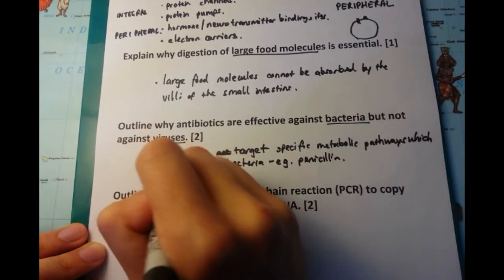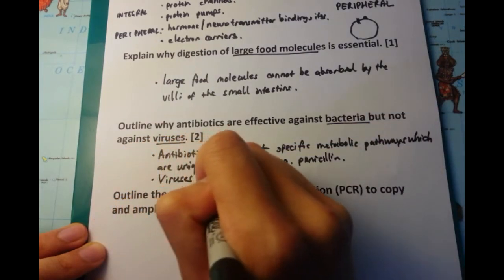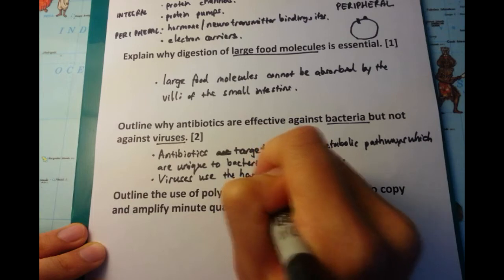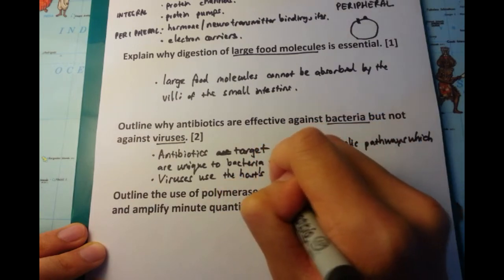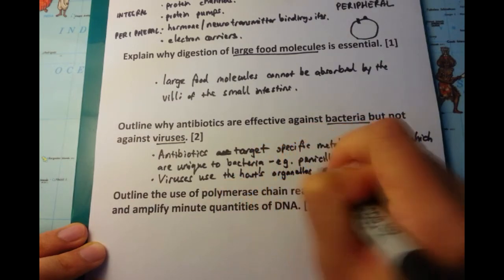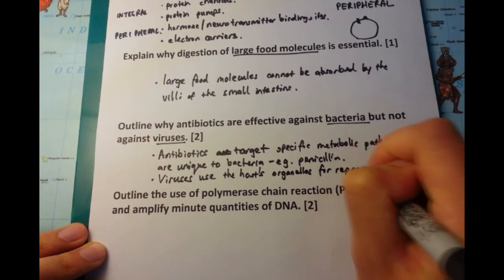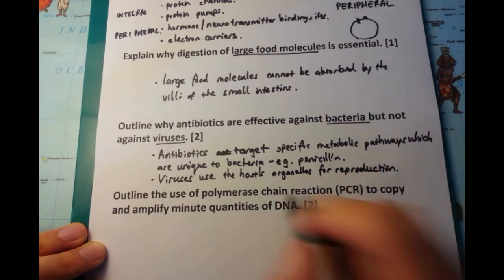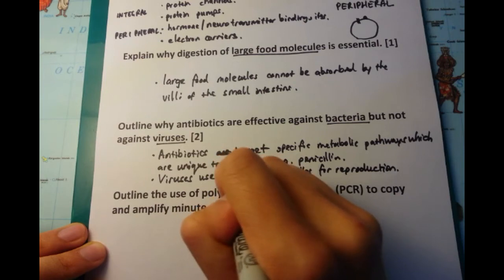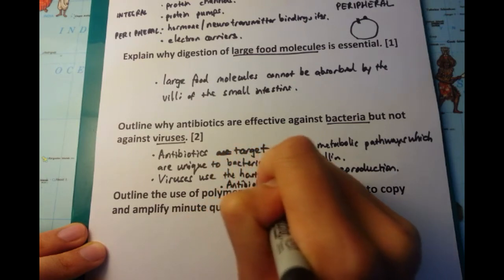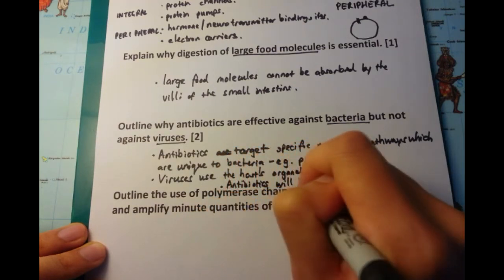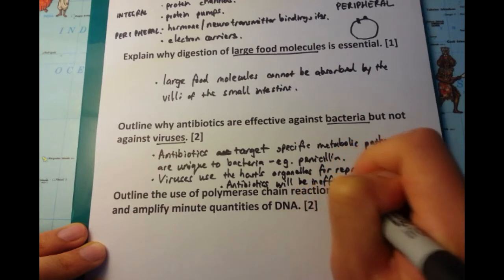The second point we're going to talk about is why it's not effective in viruses. Viruses, they don't have their own organelles to reproduce themselves. Essentially, they hijack the host's organelles. And because they use host organelles and their organ systems, then antibiotics will not be effective. Because antibiotics target bacterial systems, not your host systems.